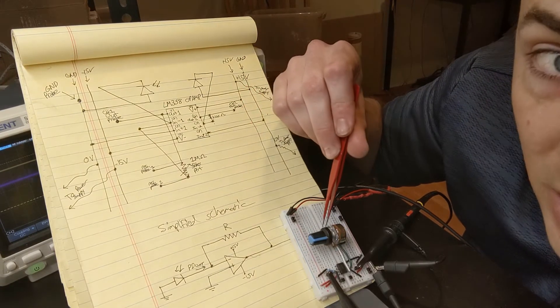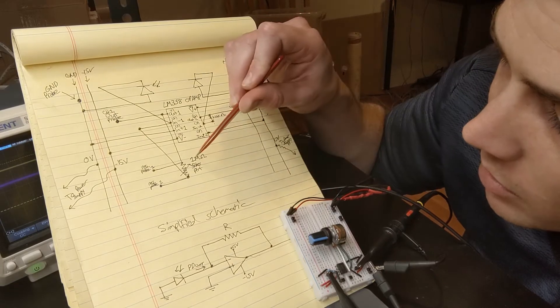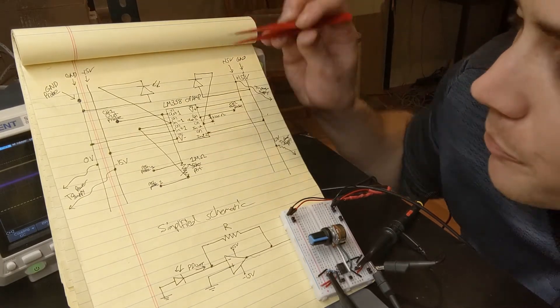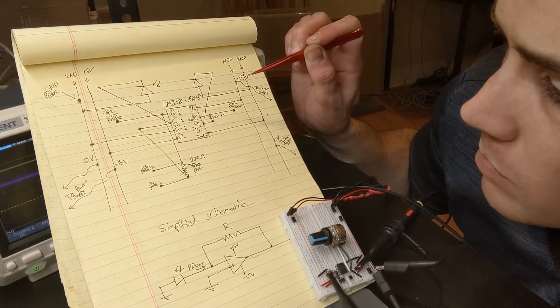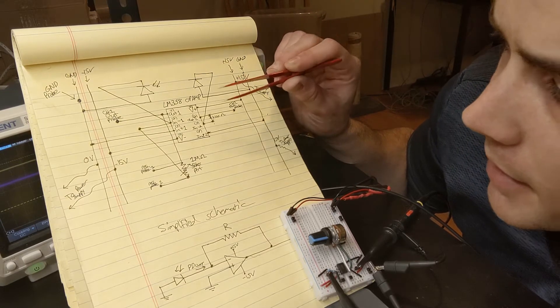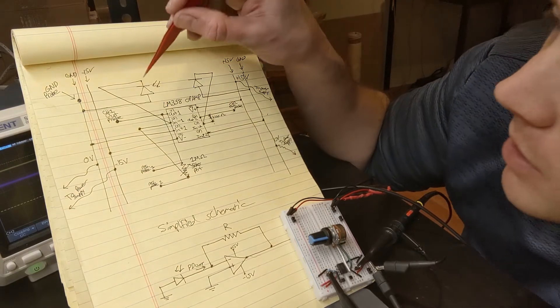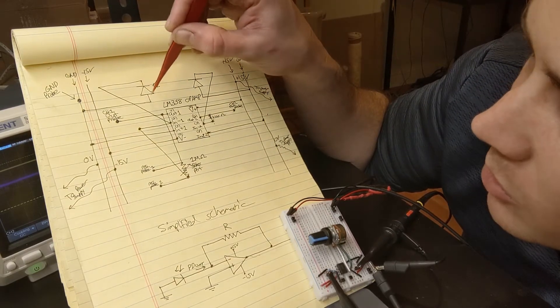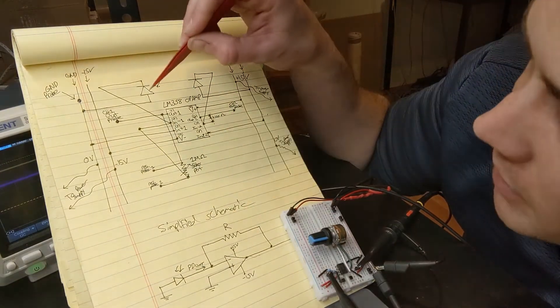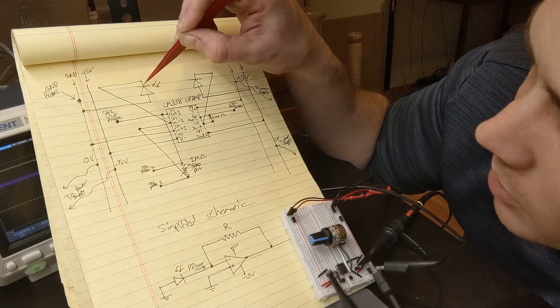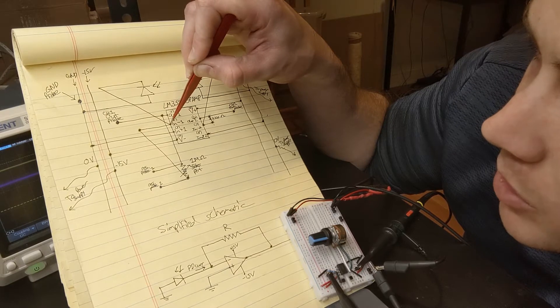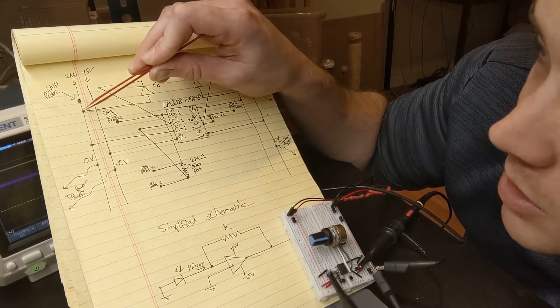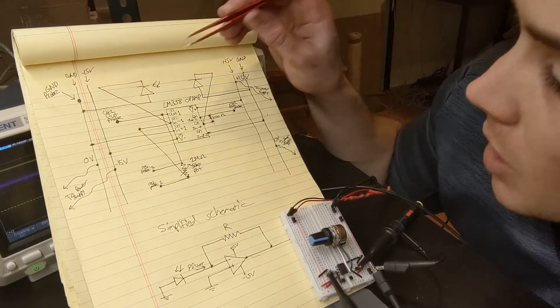And so I can change the resistance on this one. It's a one mega ohm potentiometer. The other one is a thousand ohm resistor. And I guess I'll just briefly walk through this schematic. So the photodiode, it's just like down here, the cathode is hooked up to the inverting input.